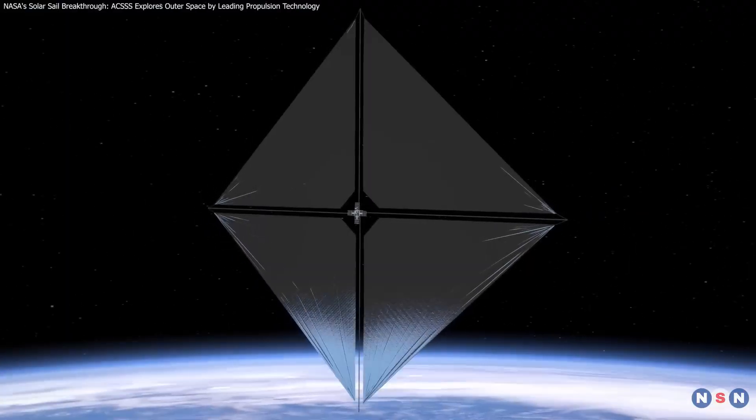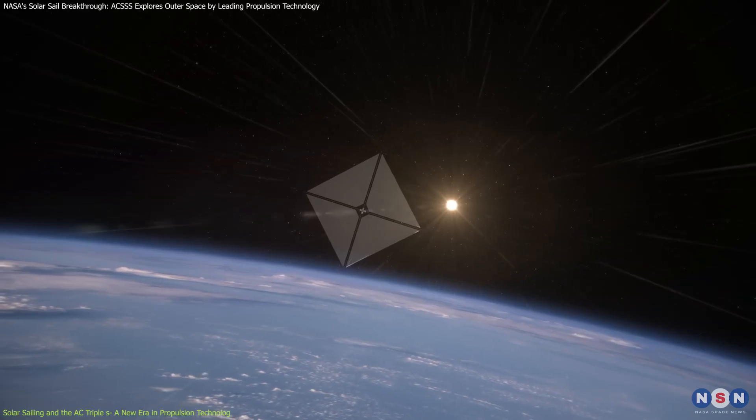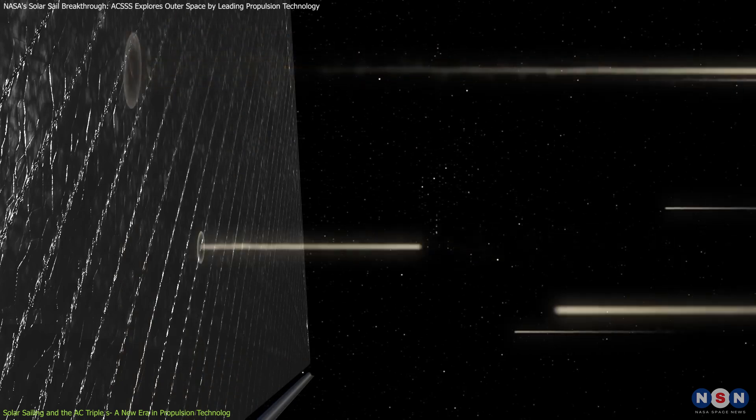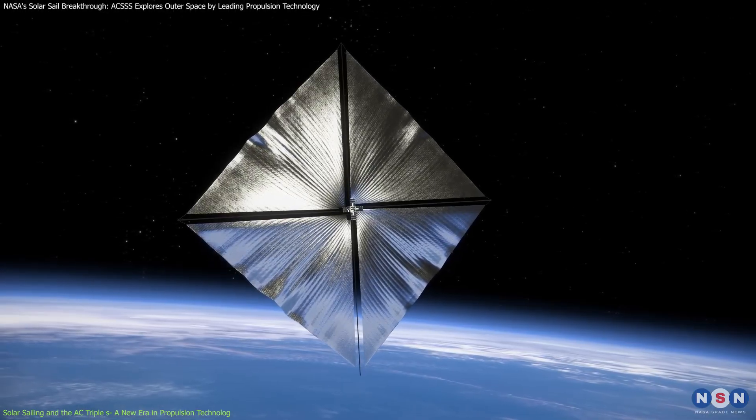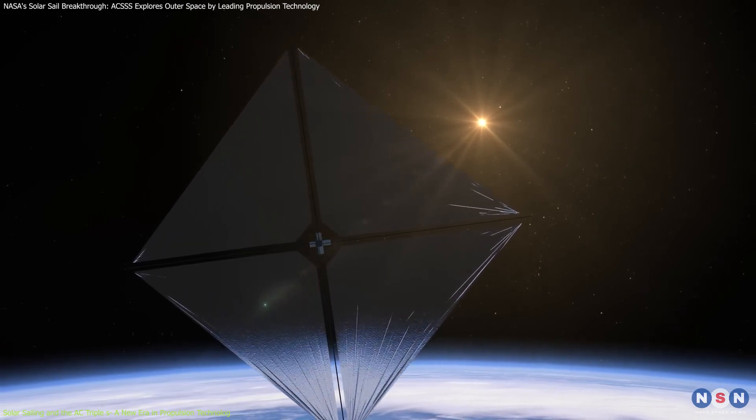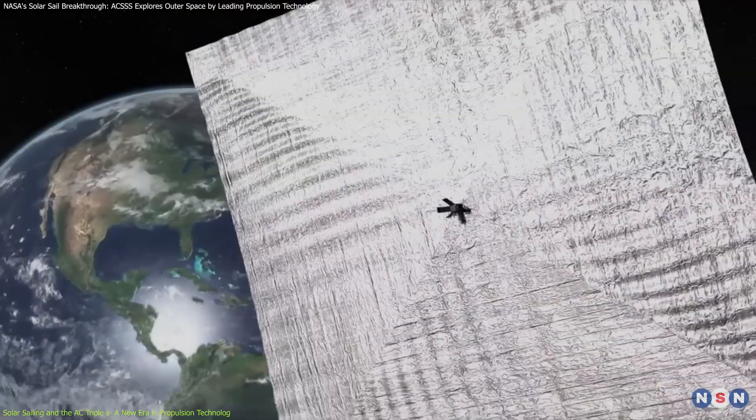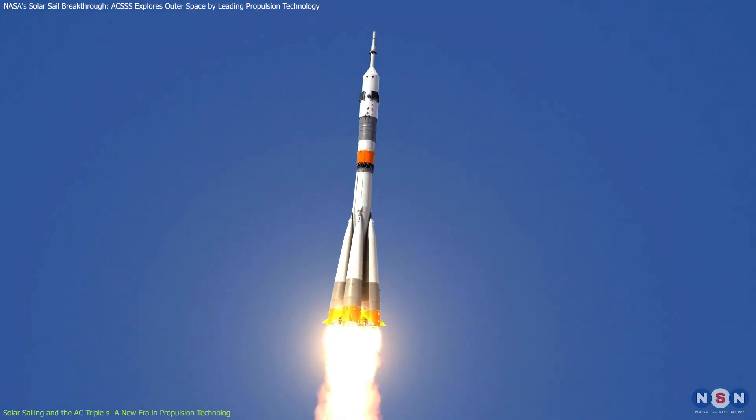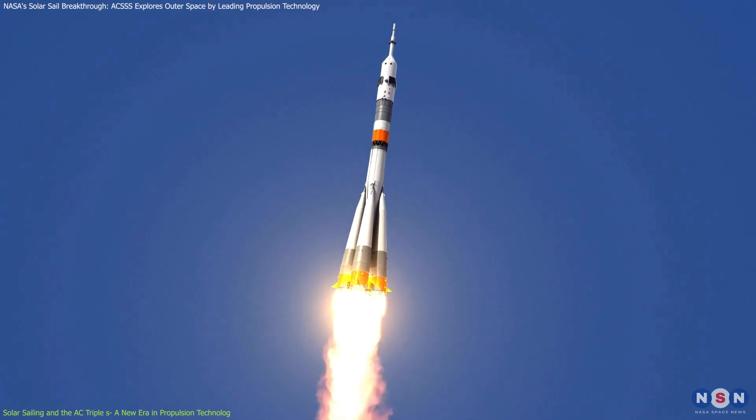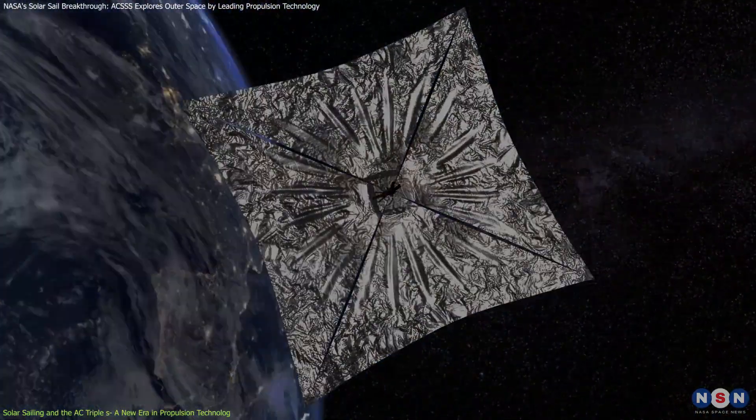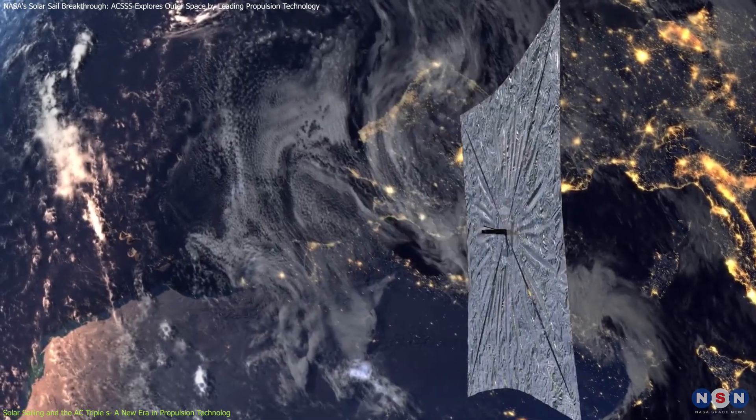Solar sailing is a propulsion method that harnesses the force of sunlight to move a spacecraft. When photons from the sun strike a reflective sail, they transfer momentum, creating a continuous but gentle thrust. This thrust propels the spacecraft without relying on conventional fuel, making solar sails lightweight and highly efficient. Unlike traditional rockets that consume large amounts of fuel, solar sails provide a sustainable way to travel through space, enabling steady propulsion over long periods.